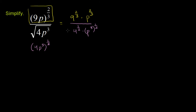Let's see if we can simplify this even more. Let's do the denominator first. What's 4 to the 1/2 power — the principal root of 4? Well, 2 squared is 4, so it's 2. The positive root is 2. And then p to the 3rd and then that to the 1/2 — that's the same thing as p to the 3 times 1/2, or p to the 3/2.